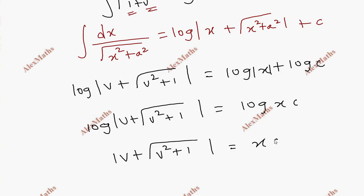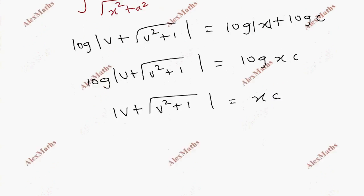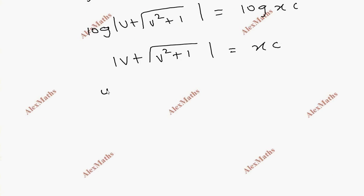Log removed and we can substitute it. Mod of v plus root of v squared plus 1 equals x times c. So now y by x plus root of y squared by x squared plus 1 equals x times c.